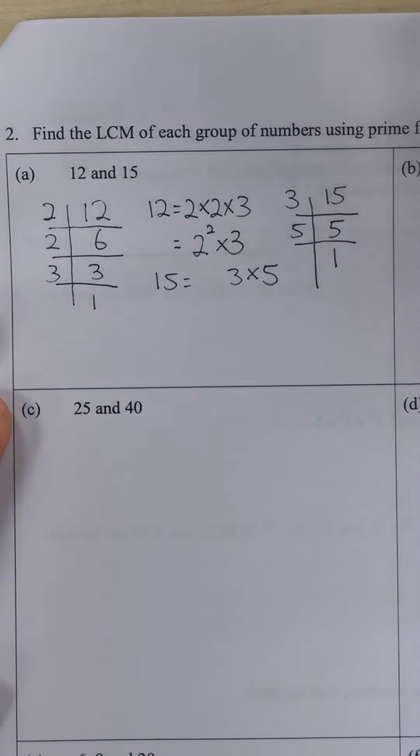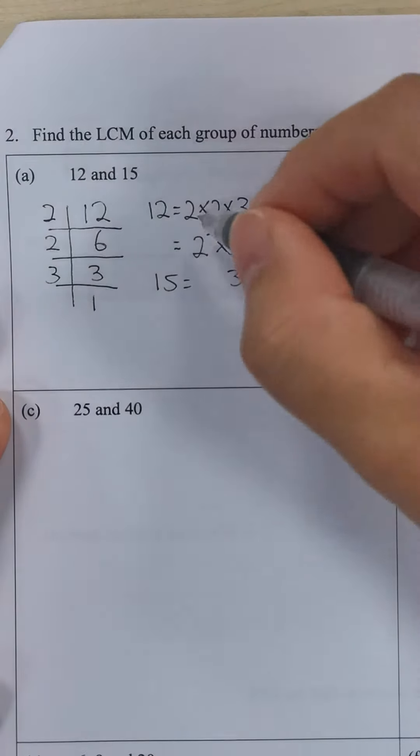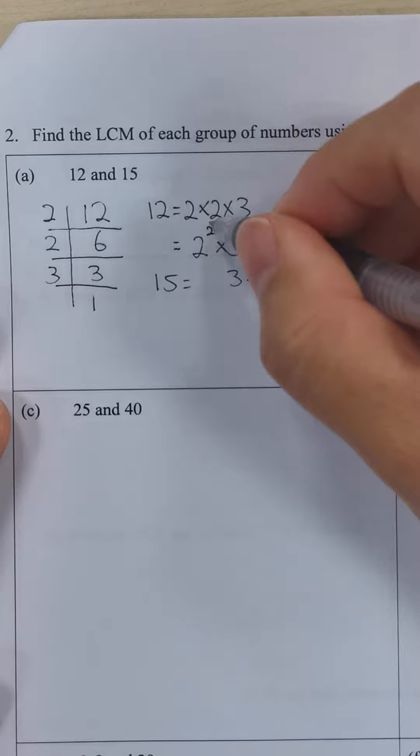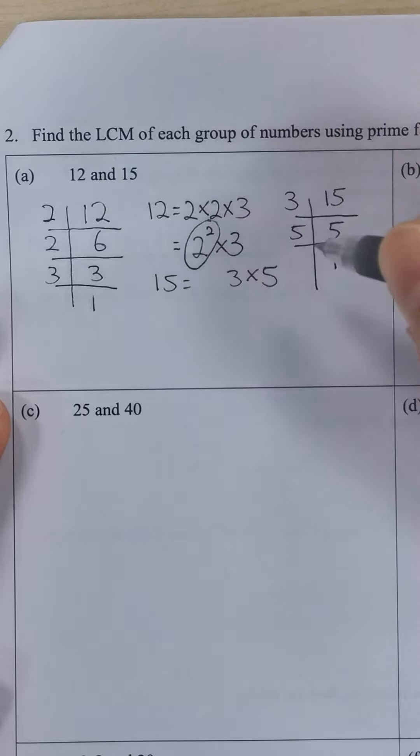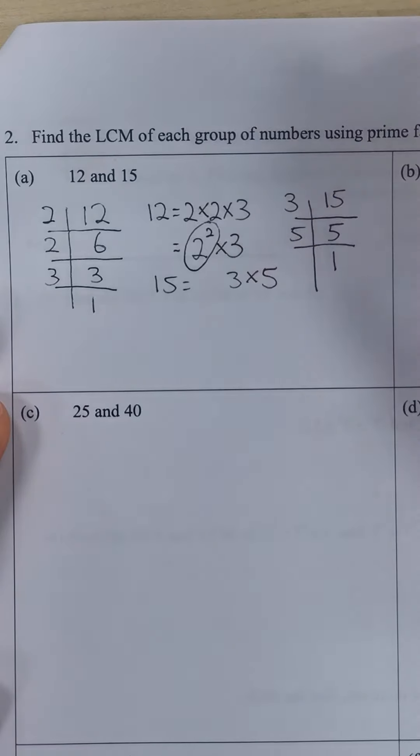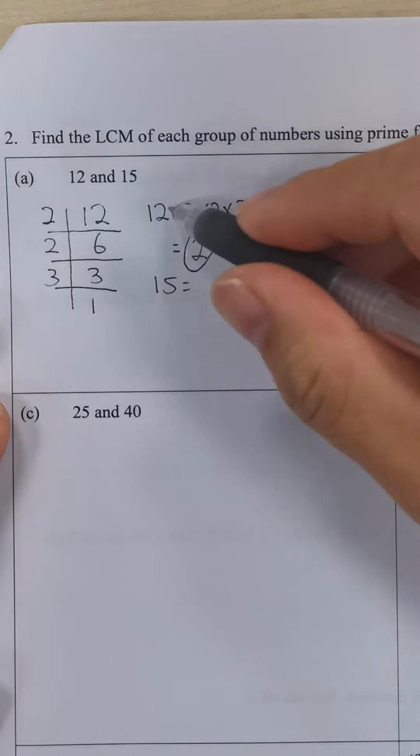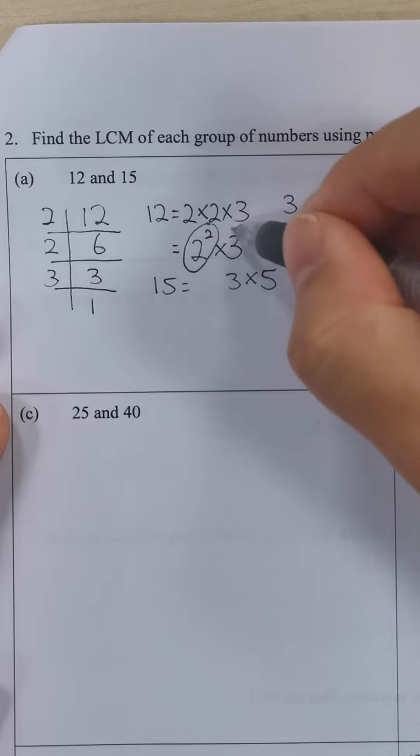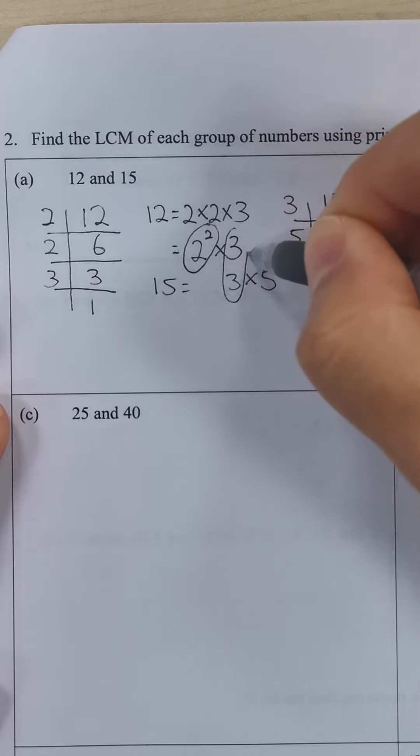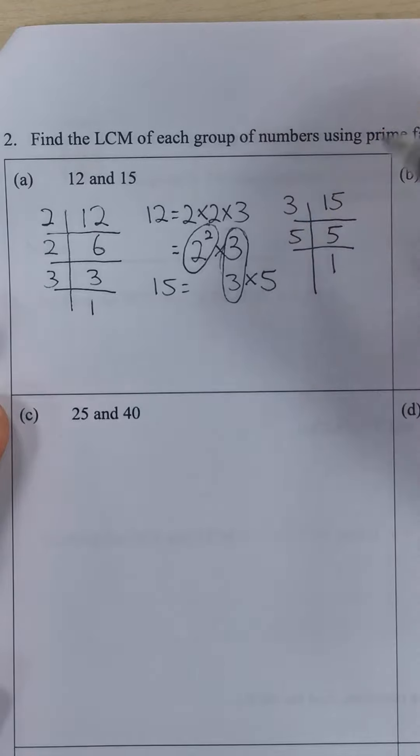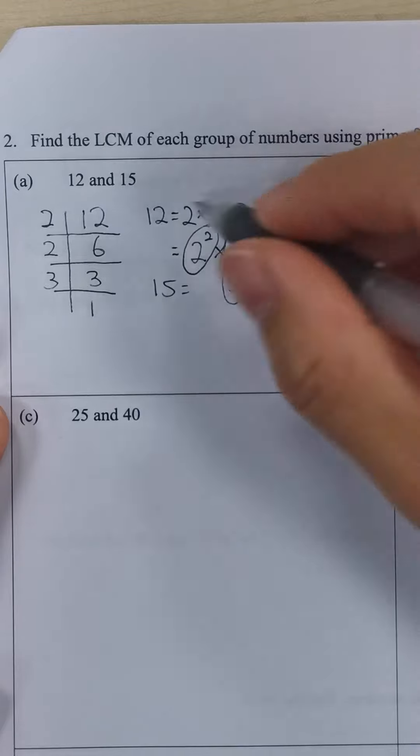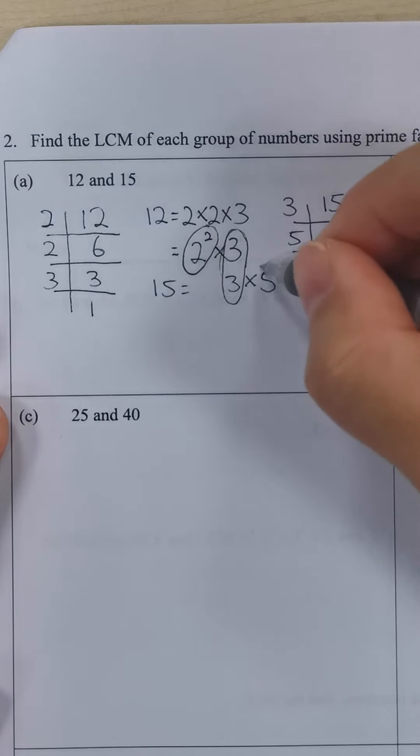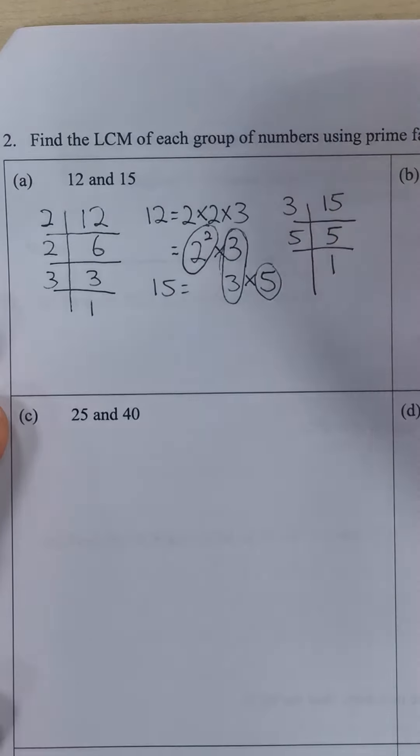Let's compare. For 12, we have 2 squared, 2 as a factor. Both 12 and 15 have the prime factor 3, so we can circle both of them together. And 5 only appears as a factor of 15 but not for 12, so we circle 5.